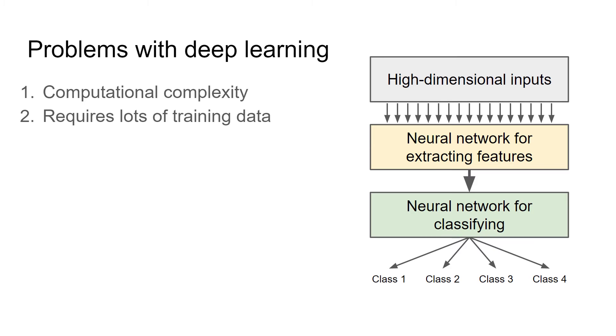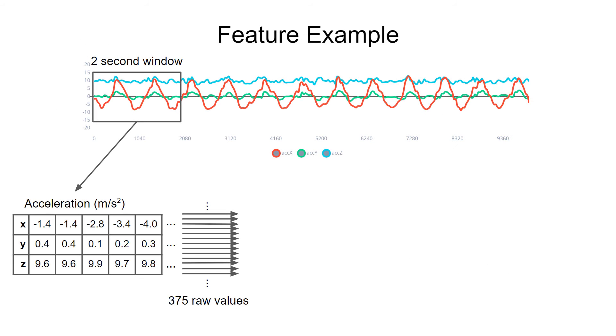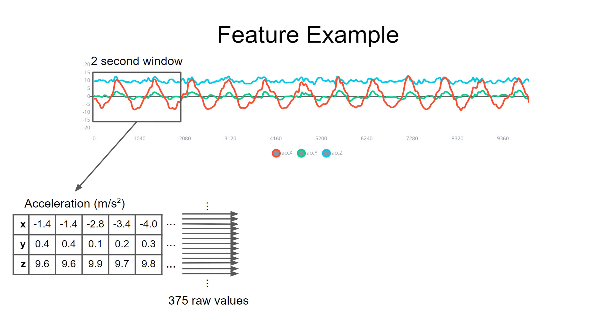One way we can do this is by choosing the features for the model manually. Rather than picking and choosing some of the raw samples, we can combine the samples in a variety of ways to generate unique features that help describe what's going on in the system.